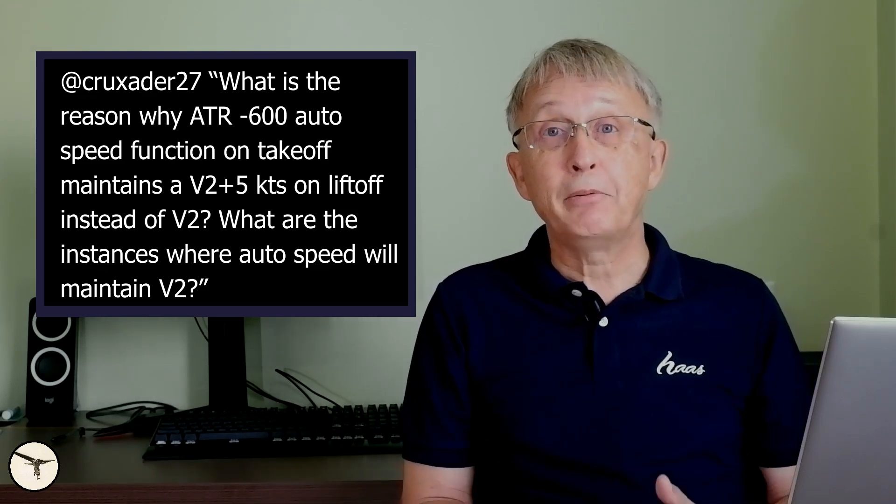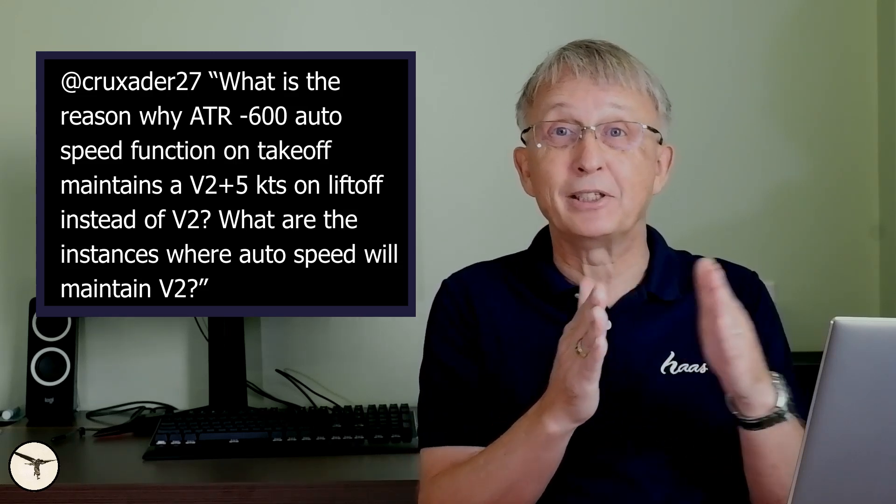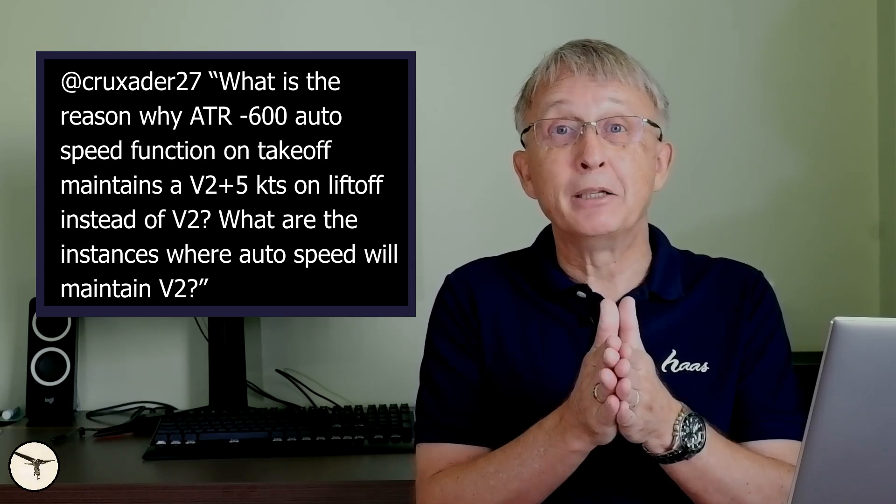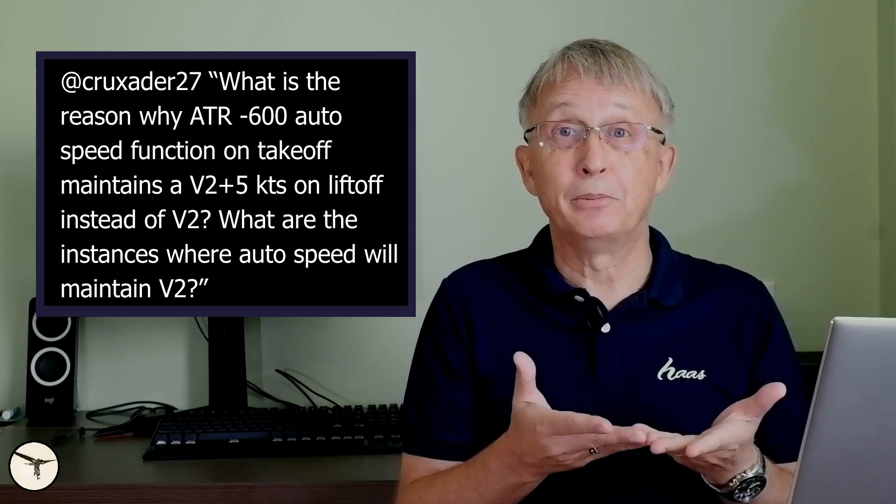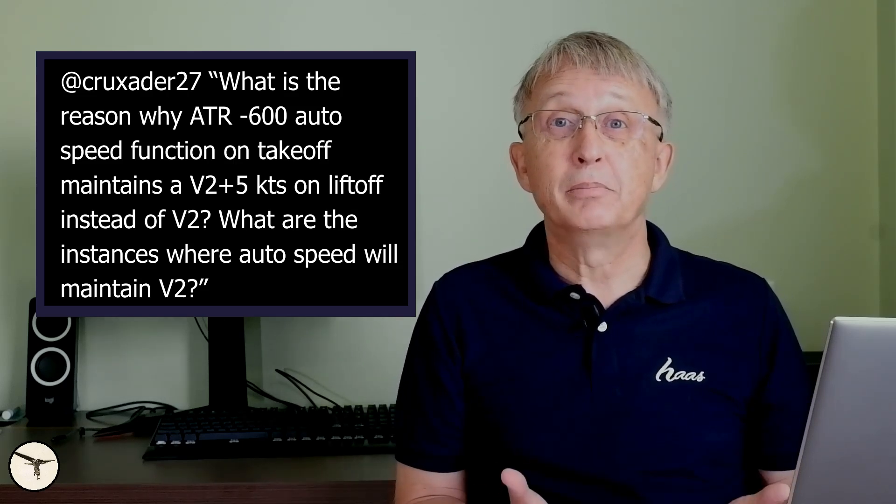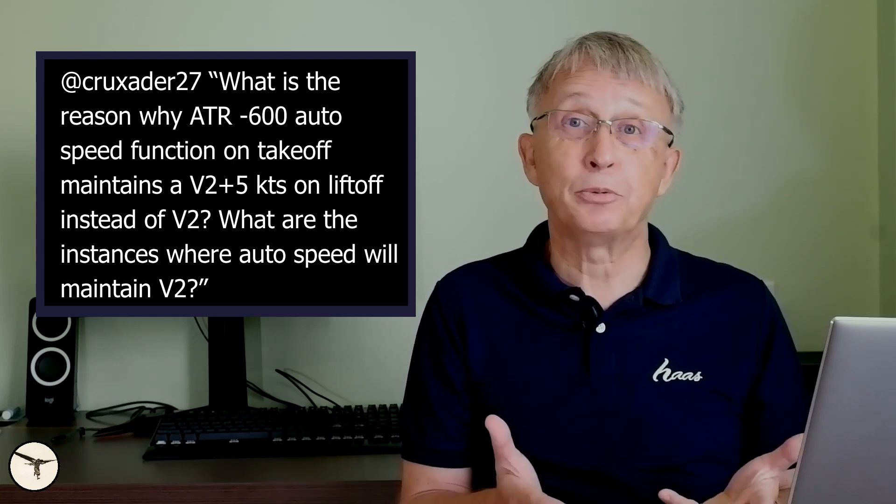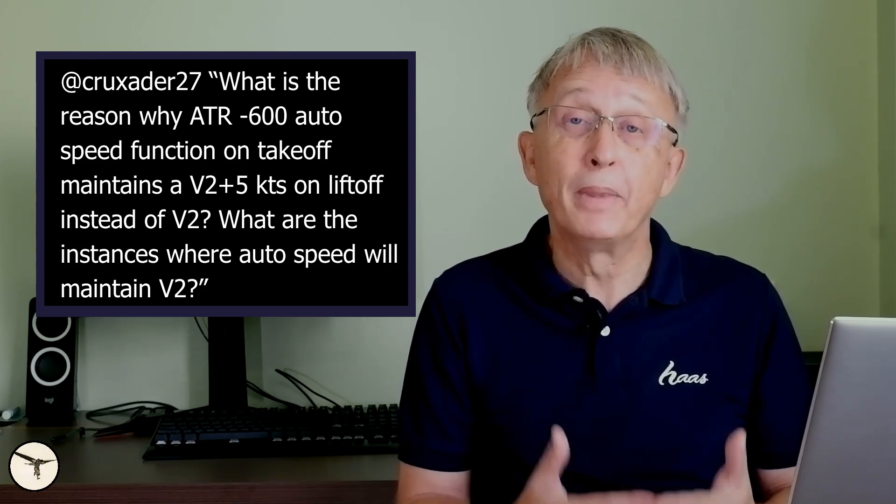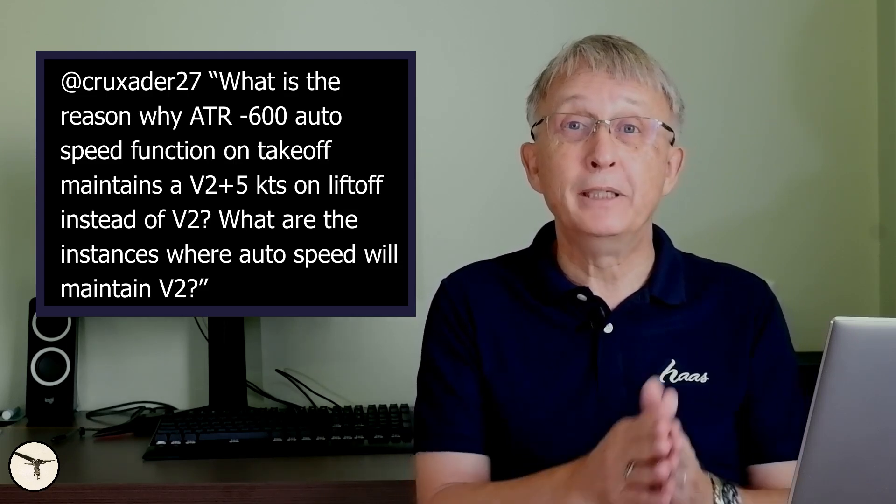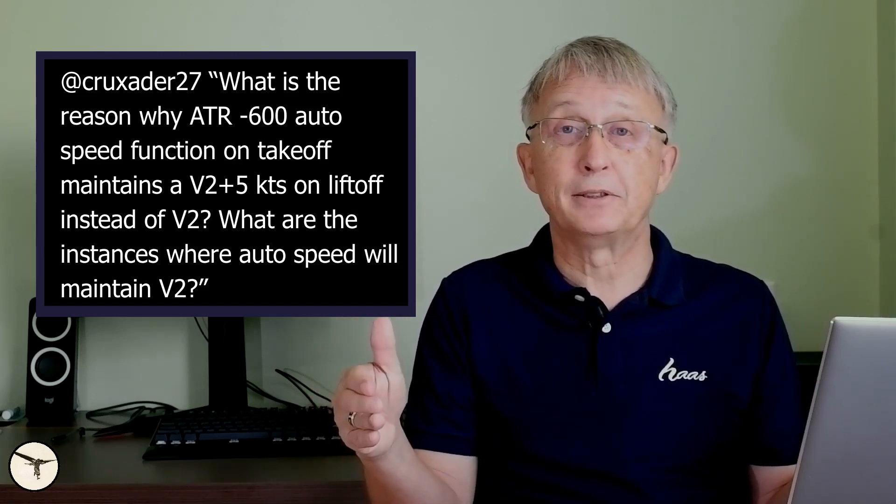We use V2 plus 5 to reduce the drag, because you are on the bad side of the power and drag curve. So by increasing the speed a little bit, you get a better climb performance. Some companies, or other aircraft types, they use V2 plus 10. You can use up to V2 plus 20 as far as I know, and all for better climb performance. But of course, you need a bit longer runway takeoff distance to achieve that.